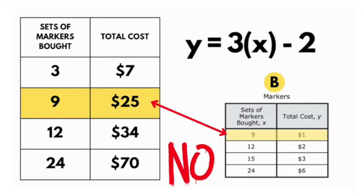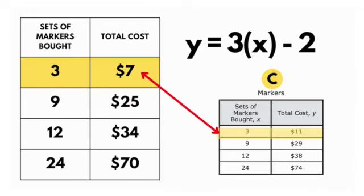Let's go to C. C has 3 as well. We know when we plug in 3, 3 times 3 is 9, minus 2 is 7. In this case, they're saying 3, when we plug in 3, it equals 11. That's not true, so that one won't work.